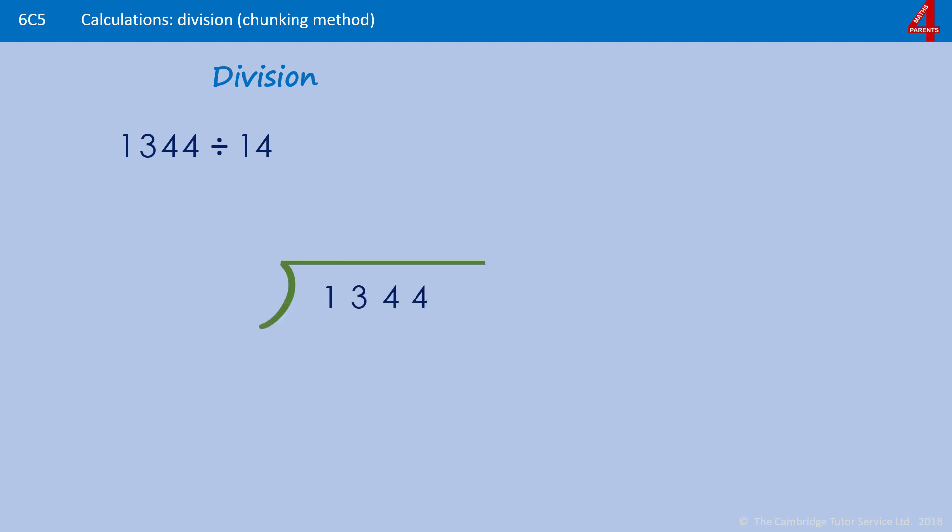If we have 1344 divided by 14 and we set it out as we would a short division problem, we start by saying 14 into 1 that's 0, 14 into 30 that's also 0, and now we're on 14 into 134 which isn't very helpful.